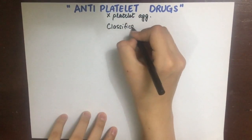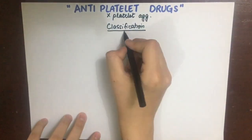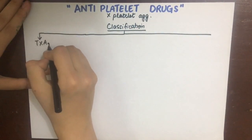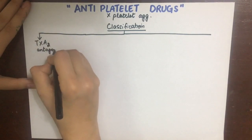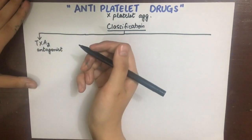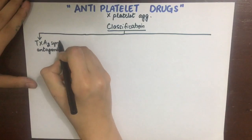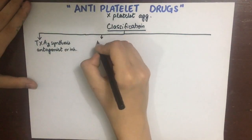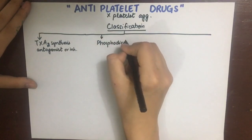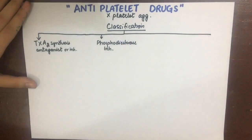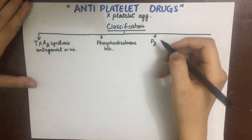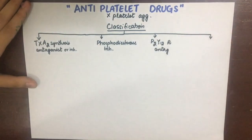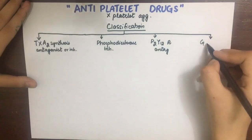Now that we know where different antiplatelet drugs can act on primary platelet plug formation, let's classify them. First are thromboxane A2 synthesis inhibitors. Second are phosphodiesterase inhibitors. Third are P2Y12 receptor antagonists. And lastly, GP2b3a receptor antagonists.